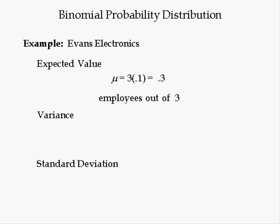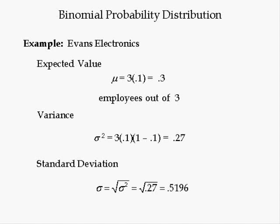0.3 employees out of 3 are expected to leave over the course of the year. The variance is equal to 3 times 0.1 times 1 minus 0.1, which is 0.27. The standard deviation is just the positive square root of the variance, which equals 0.5196.